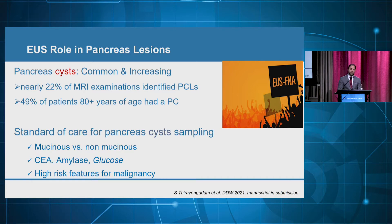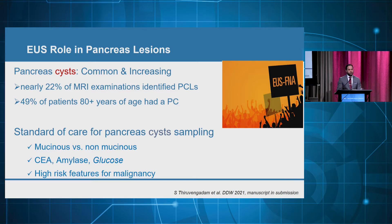EOS is very helpful in clarifying what type of cysts we deal with. For example, when we aspirate the fluid and send it for CEA, amylase, glucose, and cytology, it helps us clarify if the cyst is mucinous versus non-mucinous. If CEA is elevated and glucose is low, usually we're dealing with mucinous cysts, which are pre-malignant, and those require further surveillance and management, as Dr. Moussami alluded to in the previous presentation.